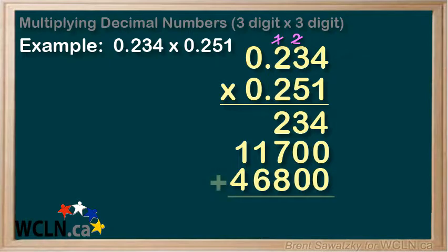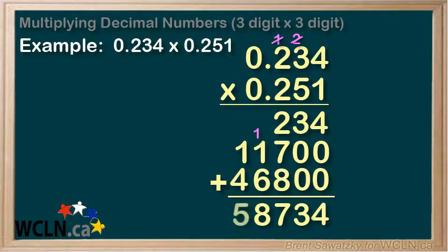And as a final step, we add the three parts of our final answer. Four plus zero plus zero equals four. Three plus zero plus zero equals three. Two plus seven plus eight equals 17, so we'll mark the seven and carry the one. One plus six is seven, plus the carried one equals eight. And one plus four equals five.